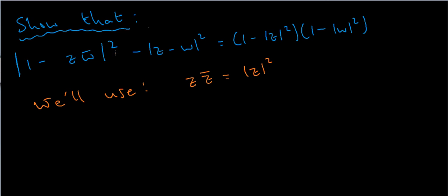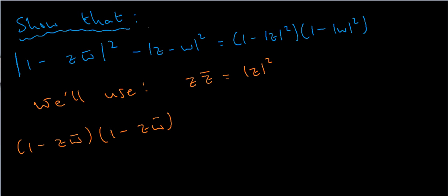Instead of having absolute value signs I'm going to use this identity to rewrite them. So |1 - zw̄|² is the same thing as writing (1 - zw̄) times the conjugate of (1 - zw̄). And |z - w|² is the same thing as (z - w) times the conjugate of (z - w).